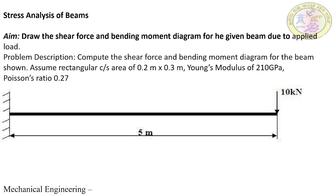Hello everyone and welcome to the ANSYS tutorial. In today's session we are discussing shear force and bending moment of a cantilever beam which is fixed at one end and a load of 10 kilo newton is acting at the free end. The problem is to compute the shear force and bending moment diagram. Assume a rectangular cross section of 0.2 meter by 0.3 meter, Young's modulus of 210 GPa, and Poisson's ratio of 0.27. The length of the beam is 5 meter.